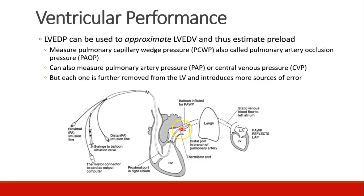The pulmonary capillary wedge pressure is one invasive way to determine a patient's volume status. We could also measure pulmonary artery pressure with the balloon deflated, measuring pulmonary artery pressures directly. Or we could measure central venous pressure, measured in the right atrium or SVC, preferably in the right atrium. As you can see, each step is further removed from the left ventricle, introduces more sources of error from the lungs, the pulmonary vasculature, and the valves — but each one is also a little bit less invasive.